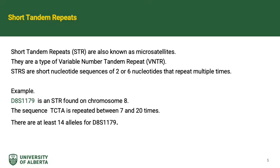Short tandem repeats, abbreviated as STR, are also known as microsatellites. They are a type of variable number tandem repeat. STRs are short nucleotide sequences of 2 to 6 nucleotides that repeat multiple times. D8S1179 is an example of an STR located on chromosome 8. STRs are polymorphic, which means there is more than one variant.